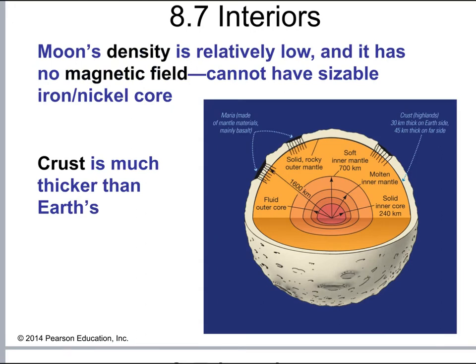The Moon's low density tells us it probably does not have much iron or nickel in its core — unlike the Earth, whose core is predominantly iron and nickel. Because of that, the Moon also lacks a magnetic field like the Earth's. The Moon's crust is much thicker than the Earth's, but its interior is quite different overall, and all of this will help us understand the theory of how the Earth's Moon actually formed.